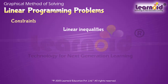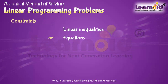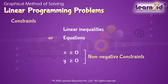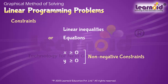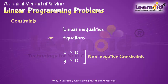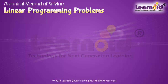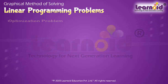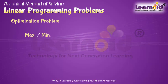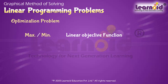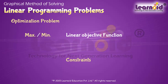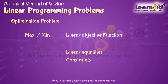The linear inequalities or equations or restrictions on the decision variables of a linear programming problem are called constraints. A Linear Programming Problem is a type of optimization problem which seeks to minimize or maximize a linear function of two or more variables, subject to certain constraints set through linear inequalities.